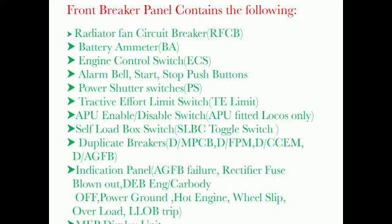Battery Ammeter BA; Engine Control Switch ECS; Alarm Bell; Start and Stop push buttons; Power Shutter Switches PS; Track to Effort Limit Switch TE Limit; APU Enable or Disable Switch (APU fitted locos only); Self Load Box Switch SLBC toggle switch; Duplicate Breakers — D-bar MPCB, D-bar FPM, D-bar CCM, D-bar AGFB. Indication panel: AGFB failure, rectifier fuse blown out, DEB engine and car body off, power ground, hot engine, wheel slip, overload, LLOB trip.